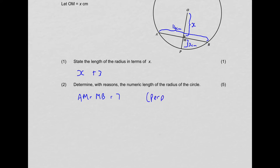We're going to state that AM equals MB, and that equals 7. The reason is: perpendicular line from center to chord. Fill that in on your diagram — 7 centimeters. You can see a triangle forming with OM, MA, and AO. Use that triangle and Pythagoras to get the value of X, then add X to 3 to get the radius.